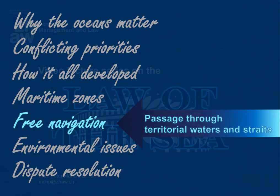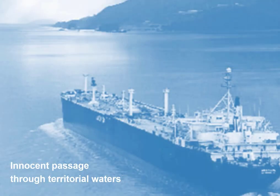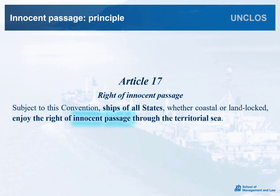In addition, the Convention also offers precise rules on passage through territorial waters and straits, which is how the Convention deals with potential conflicts between the rights of coastal states and free navigation. In principle, a coastal state has full jurisdiction and control over its territorial sea extending to up to 12 nautical miles from the baseline. However, it cannot prevent foreign ships from sailing through those waters. Article 17 of the United Nations Convention on the Law of the Sea says that ships of all states enjoy the right of innocent passage through the territorial sea. However, this right is limited to mere passage, and such passage must be innocent.